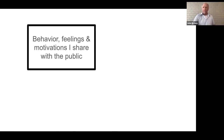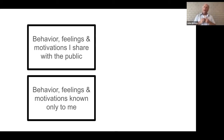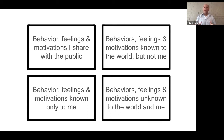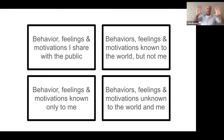Basically, the way the model works is this: there are some behaviors, feelings, and motivations that I share with the public — and some that I keep to myself. By a similar token, some of the behaviors and feelings and motivations I have, I'm completely unaware of, but those around me know them. And then in the fourth box, we put the things that nobody knows — not me, and not the people I'm in relation with. These four different boxes of experience or understanding, arranged together, do look like the frames of a window.